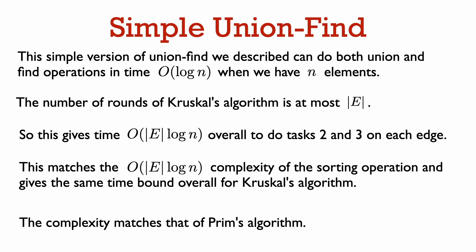Applying this back to Kruskal's algorithm: the number of rounds is at most the number of edges, and when we process an edge, we might do a couple of find operations and potentially a union operation, taking O(log n) per round. This gives O(E log n) to process all edges for tasks two and three. Combined with the O(E log E) sorting step, the overall running time of Kruskal's algorithm is O(E log n), which matches what we got for Prim's algorithm.